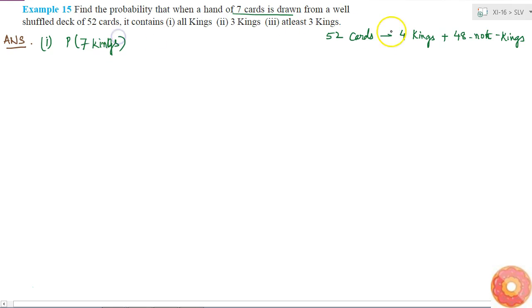We can clearly see that there are only 4 kings so you can never get 7 kings from the deck of 52 cards. So this is simply equal to 0.